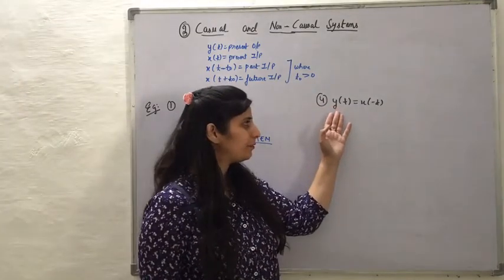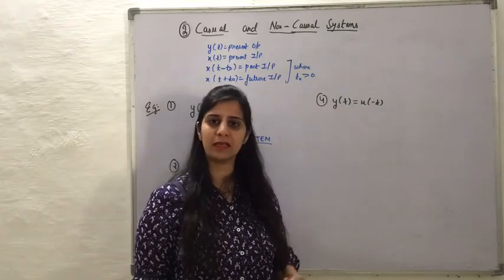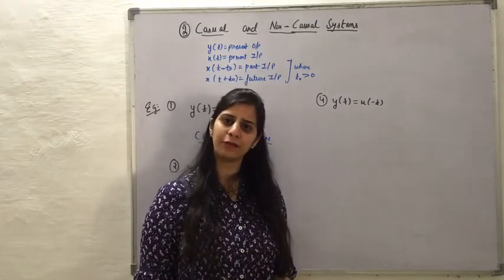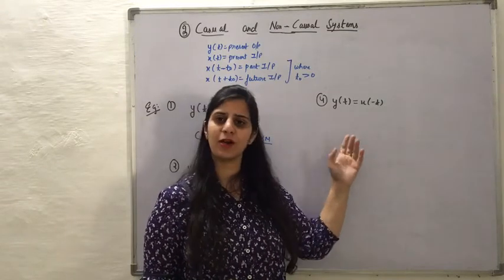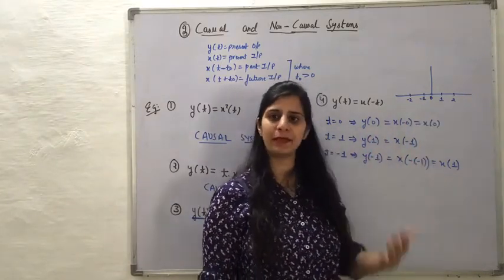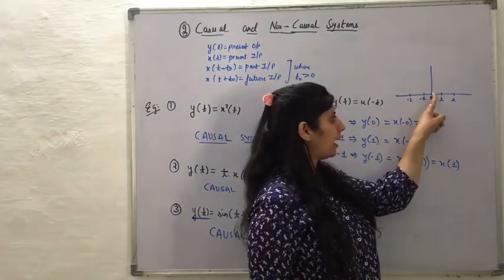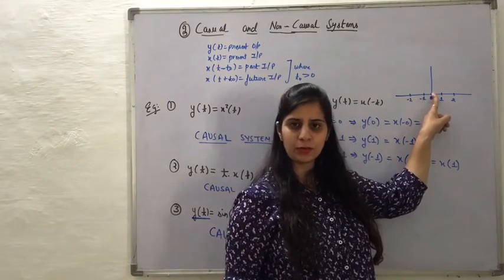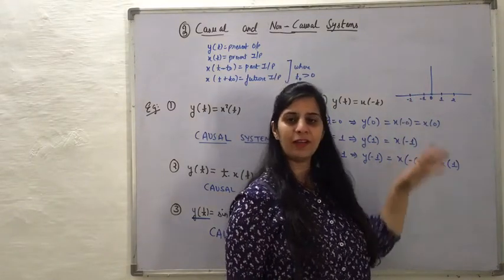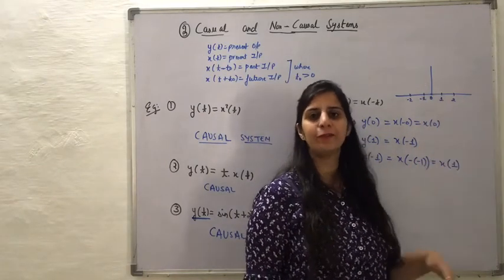In the next example, we do not have a direct relationship between input and output to determine whether the output relates to present, past, or future values. What we can do is substitute some values of t and check whether the system is causal or non-causal. I have plotted a rough graph to explain how to identify present, past, and future values. If we consider t = 0 as the present, values to the left are past and values to the right are future.